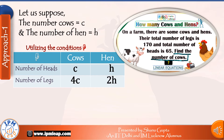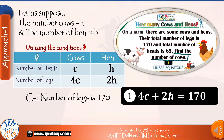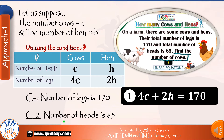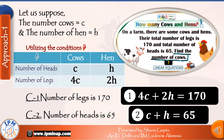Now we can comfortably write equations based on the two given conditions. Condition one: number of legs is 170, so adding up legs for cows and hens, we have 4c plus 2h equals 170. Condition two: number of heads is 65, so total number of heads of cows and hens is c plus h equals 65.